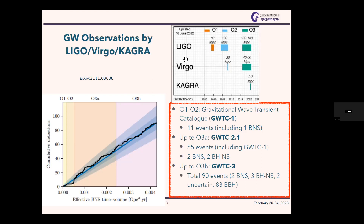There are three detectors: LIGO, Virgo, and KAGRA. The first observing run was done only by LIGO. Virgo joined at the very last moment of the second observing run. The detected sources are summarized in the gravitational wave transient catalogs: GWTC-1 contains 11 events from O1 and O2, and then GWTC-2 and GWTC-2.1 cover O3A — which was divided into two six-month periods.